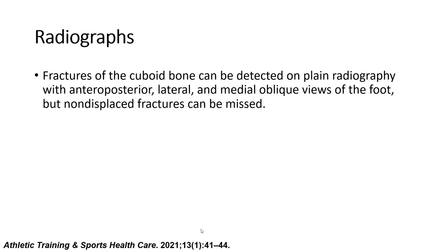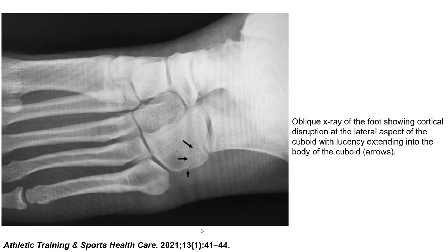On radiograph, fracture of the cuboid bone can be detected on plain radiography with anteroposterior, lateral, and medial oblique views of the foot, but non-displaced fractures can be missed. This is an example of the cuboid fracture on the oblique x-ray of the foot, showing cortical disruption at the lateral aspect of the cuboid, with lucency extending into the body of the cuboid and minimal shortening of the cuboid.